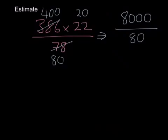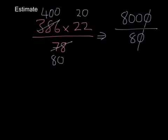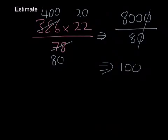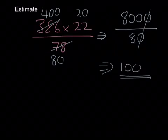We'll cancel out the zeros first — one from the bottom, one from the top. There are no more zeros to cancel. So therefore I've got 800 divided by 8, which is going to give us 100. The answer we would give is 100. The estimated value of the original question is 100.